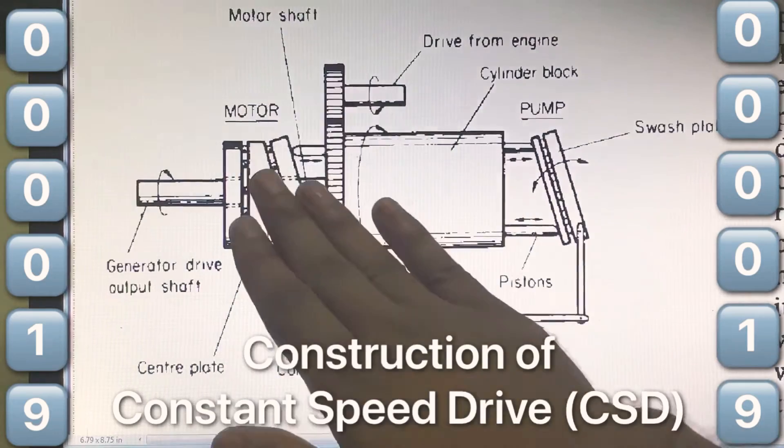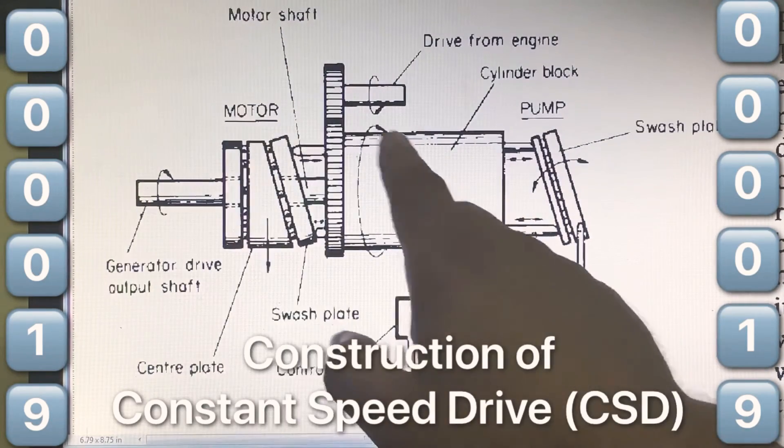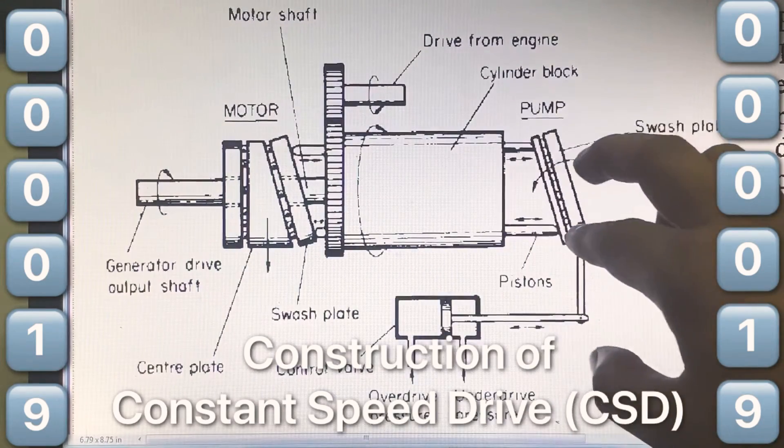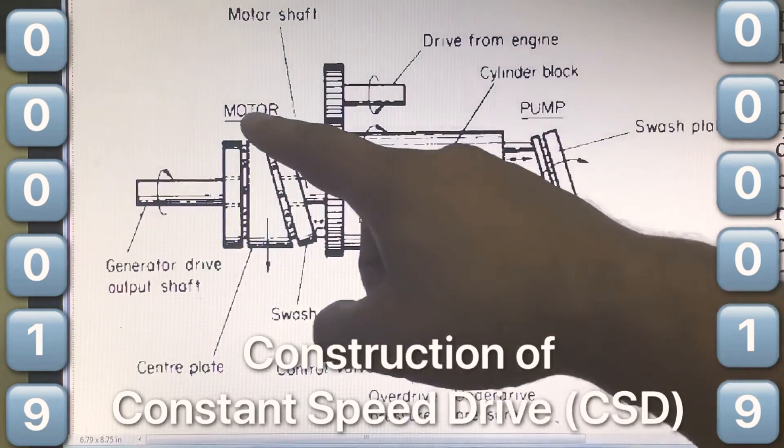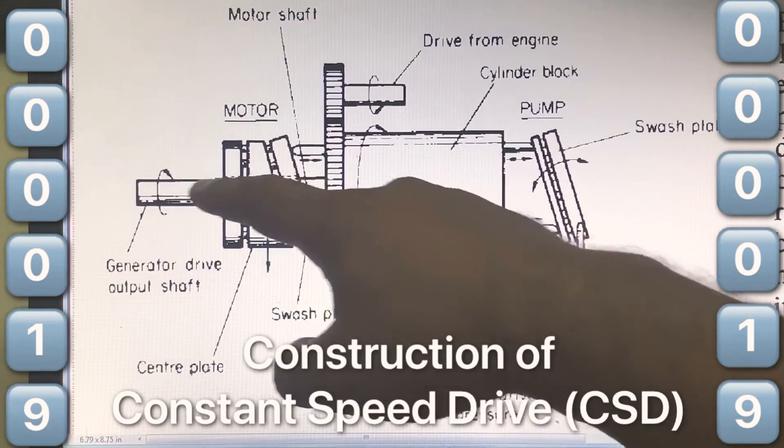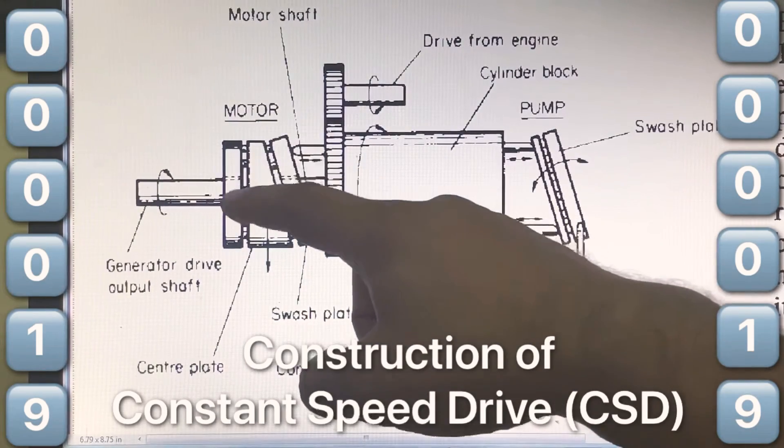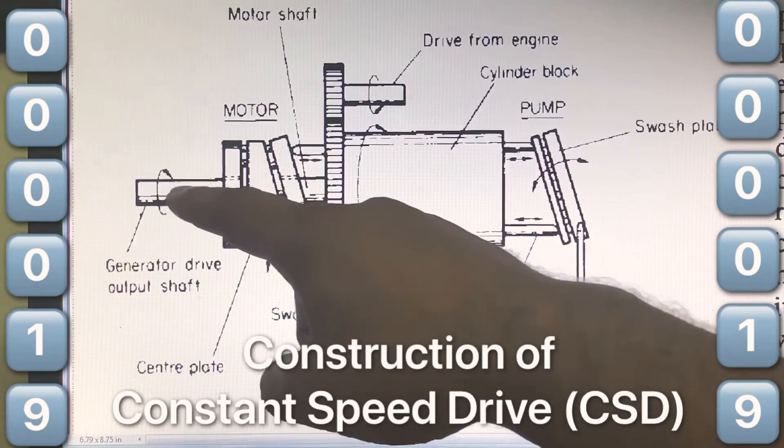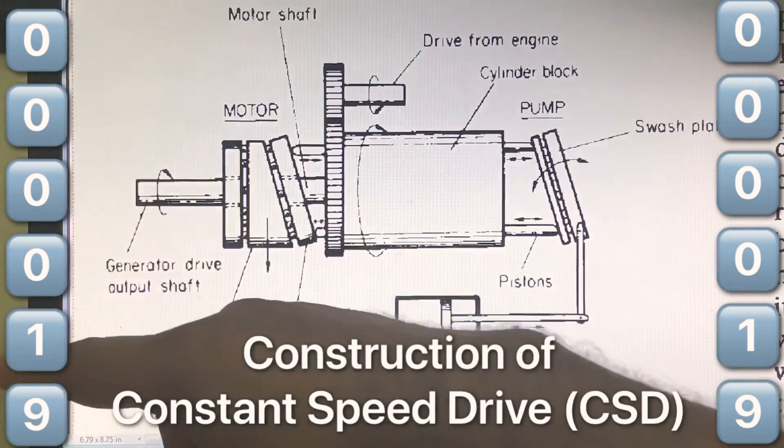On the other side of cylinder block we have the hydraulic motor. This cylinder block is common to this hydraulic pump and hydraulic motor. This hydraulic motor has its shaft here. By means of gears internally it is connected to the generator drive output shaft. So from this shaft drive is given to the generator.